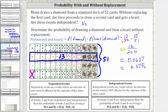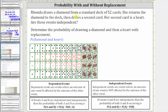Now let's look at the situation with replacement. Rhonda draws a diamond from a standard deck of cards, returns the diamond to the deck, and then draws a second card which is a heart. Are these events independent? Because she replaces the first card back into the deck, the outcome of the first event does not affect the outcome of the second event of drawing a heart, and therefore the two events are independent — so we answer yes, the events are independent.